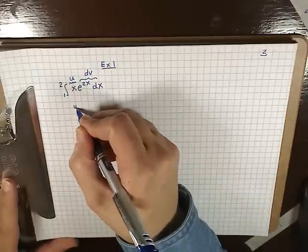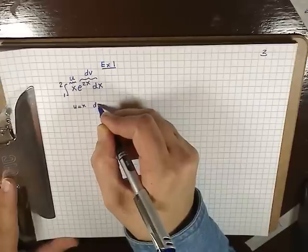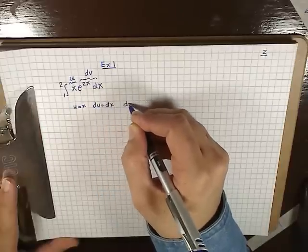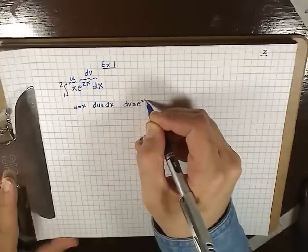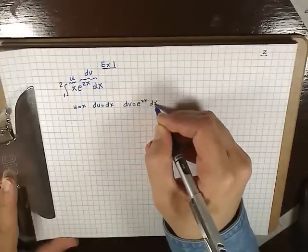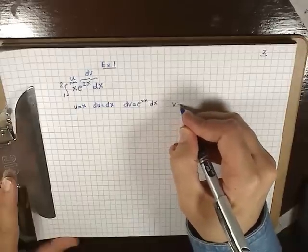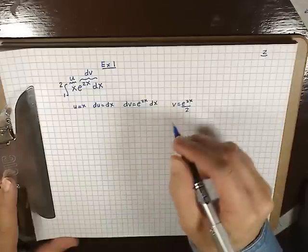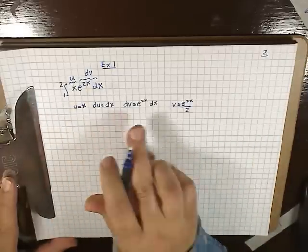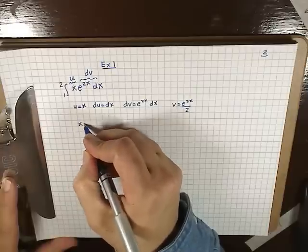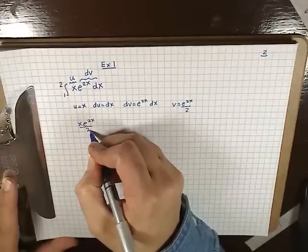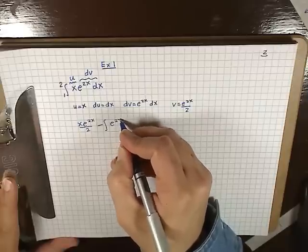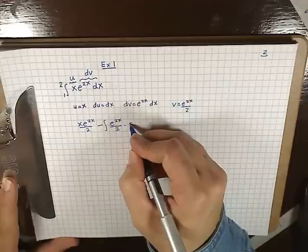So u equals x, du equals dx, dv equals e^(2x) dx. Integrating both sides, we get v equals e^(2x) divided by 2. So we get u times v — that's x times e^(2x) over 2 — minus the integral of v, which is e^(2x) over 2, times du, which is dx.